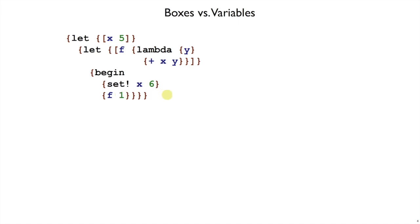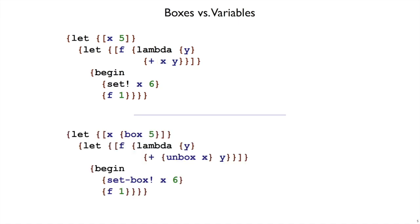So this program that uses a variable x and mutates the variable x, it's analogous to a program that uses boxes. We could let x be box of five, and then do unbox of x, and set box of x before we call the function. And the results of these two cases would be the same. There's a correspondence between using boxes for state and using variables for state.